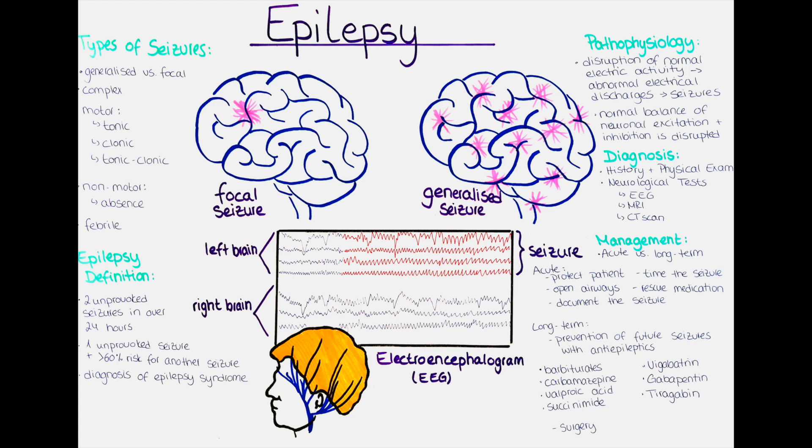The treatment of epilepsy is divided into acute management of a seizure and long-term management and prevention. The acute management of an epileptic seizure consists of several steps to ensure the patient's safety. First, protect the patient: remove any dangerous objects from the immediate environment and cushion the patient's head to prevent injury. It is not recommended to put anything in the patient's mouth, as this may lead to choking or injury to the oral cavity and airways.